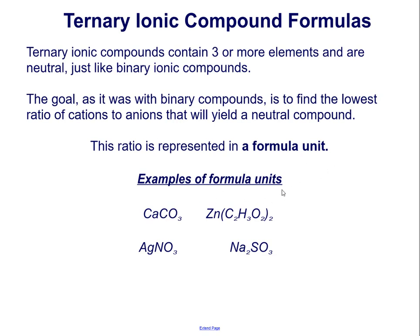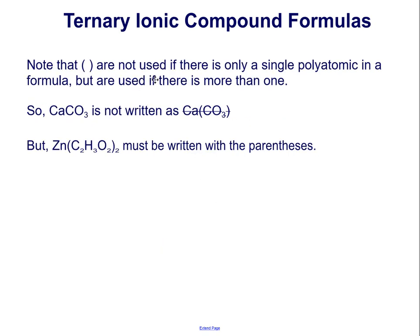Here are some examples of formula units in ternary ionic compounds. This is CaCO3 — the polyatomic ion here is CO3, and notice it appears without parentheses since there's only one of it. In this case, zinc is bonded to the polyatomic ion C2H3O2. Because there are two of these, it's kept in parentheses, and the subscript 2 tells you there are two of these polyatomic ions. Here silver is bonded to NO3, and here sodium — two atoms of sodium are bonded to one polyatomic ion, SO3. Note that parentheses are not used if there is only a single polyatomic ion in the formula, but are used if there is more than one.